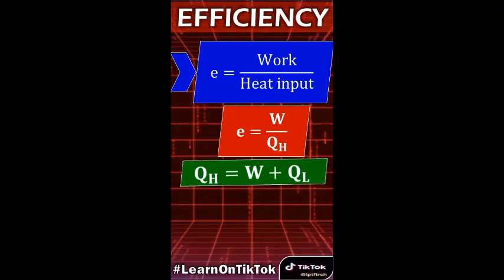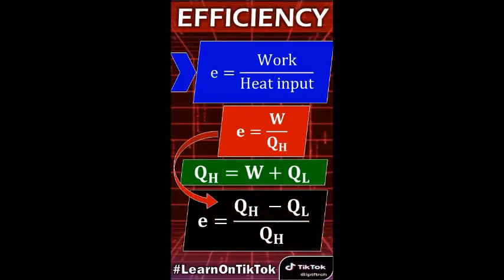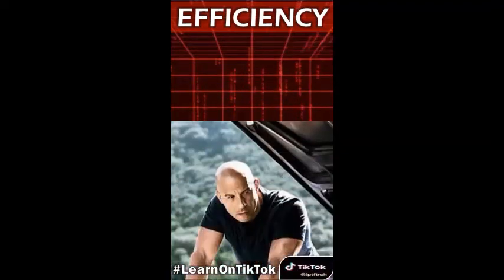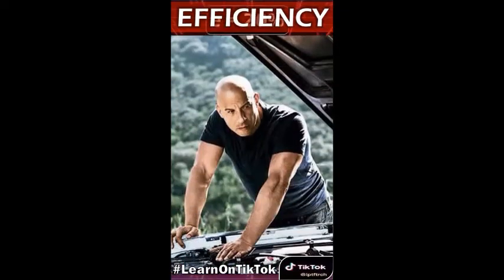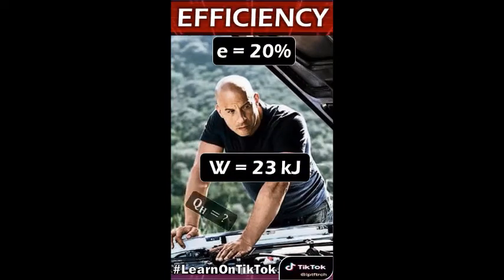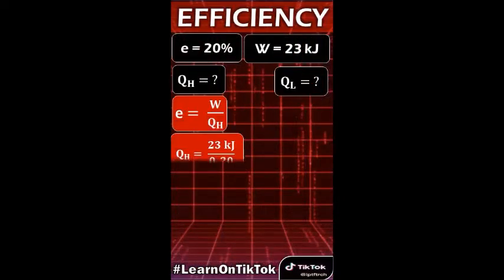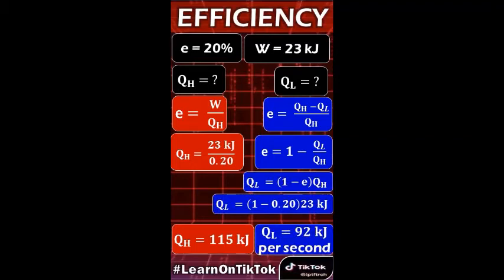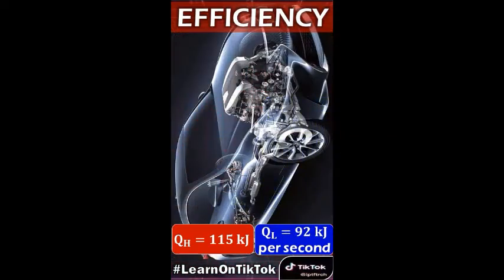Using this formula, substituting into the definition of efficiency and by simple manipulation, we arrive at the efficiency equation. Consider this example: Dom's car engine has an efficiency of 20% and produces 23 kilojoules of work per second. How much heat input is required and how much heat is discharged? Using the equation, heat input is 115 kilojoules while the engine discharges 92 kilojoules of heat per second to the environment.